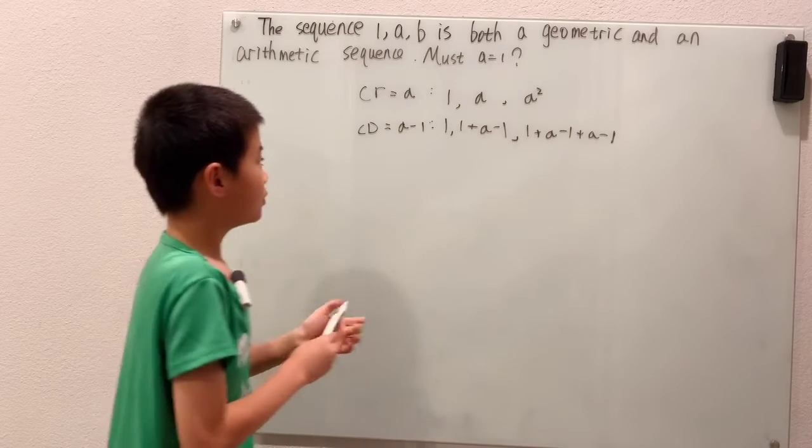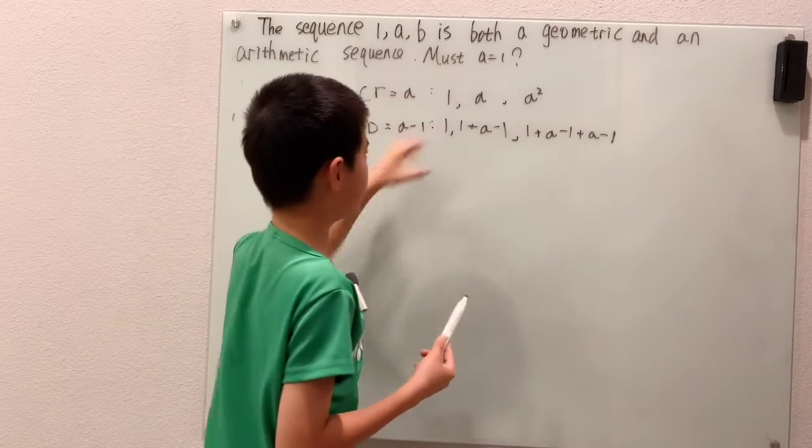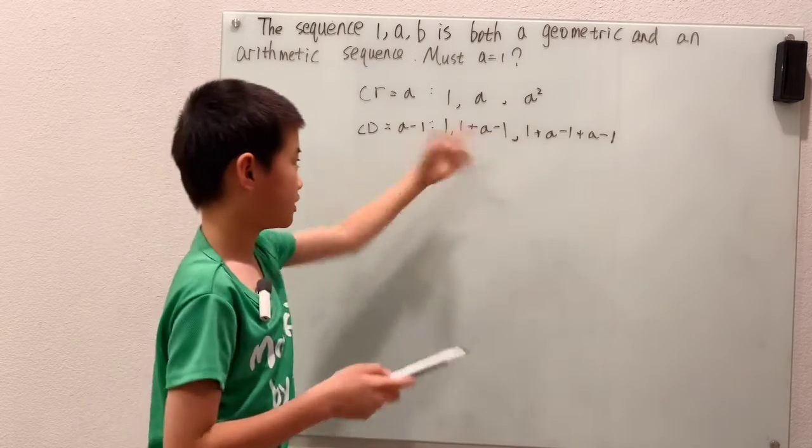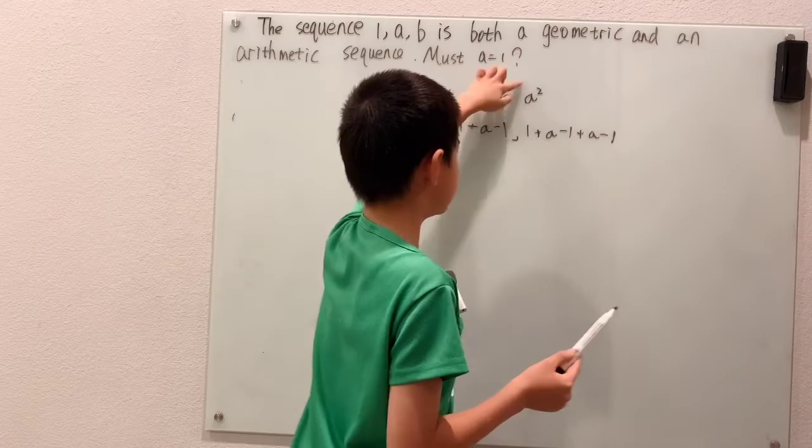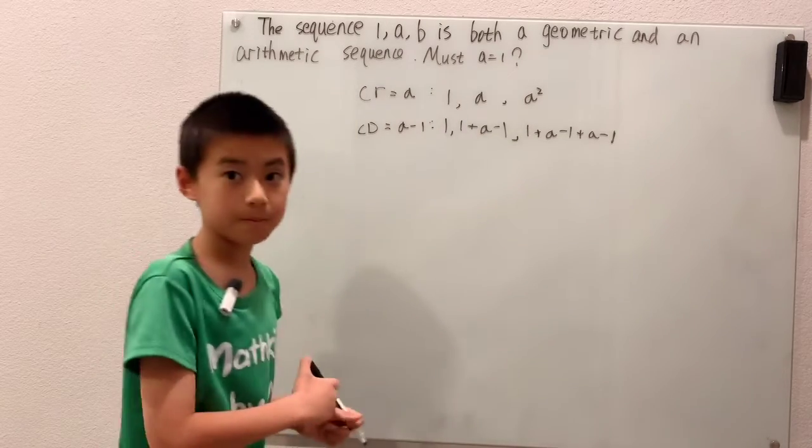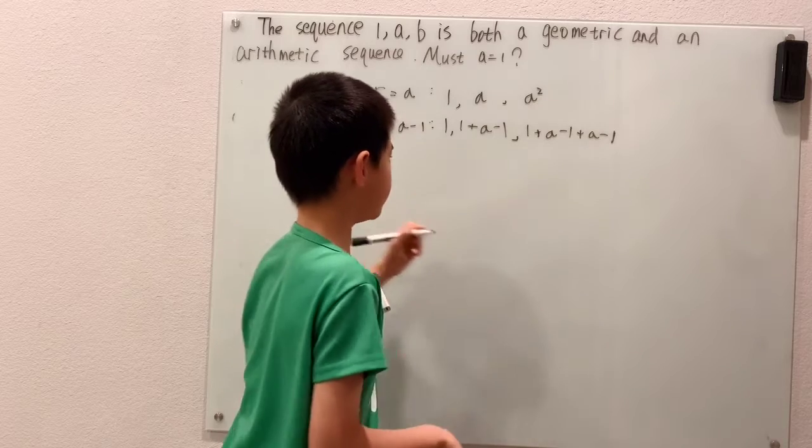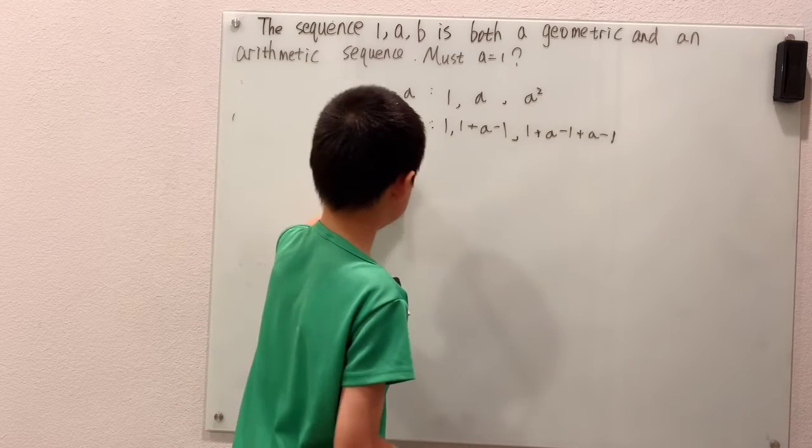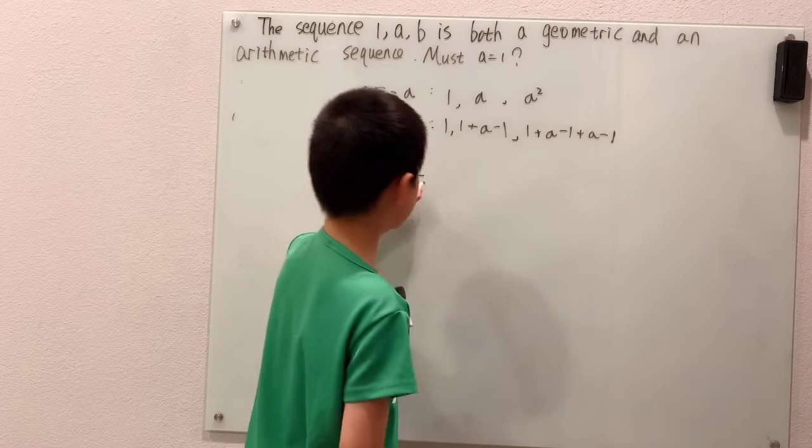Well, one is already equal. A and one plus a minus 1, the one and one cancel, so that's just a. This a squared, that's a little more interesting. I say interesting because we can at least make an equation.